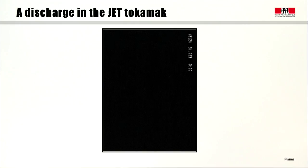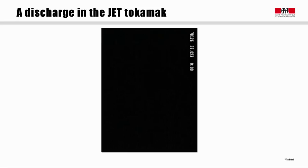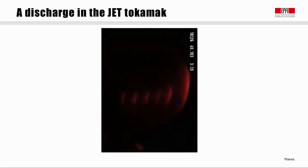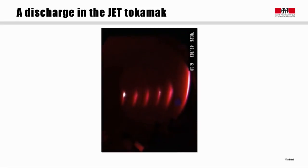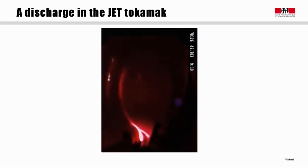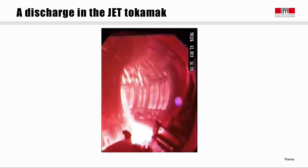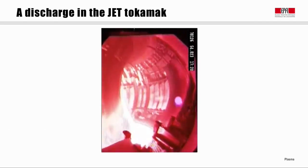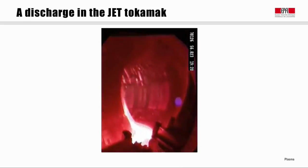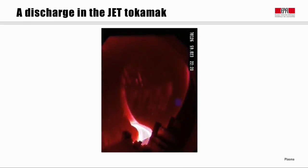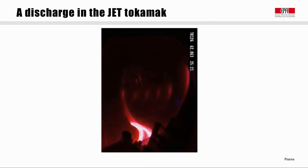We can now look at a video of a real JET discharge — a real JET plasma. We will see flashes of light where and when the plasma is formed. The patches of light indicate where there is radiation from the plasma to the wall. The plasma is formed at the bottom, then flashes of light go around the poloidal cross-section. At the end, the plasma is terminated in the ramp-down phase, again at the bottom of the tokamak.